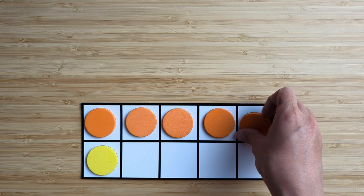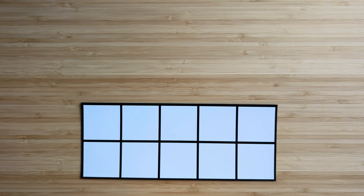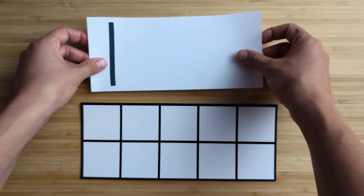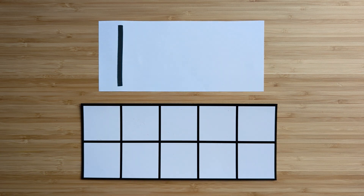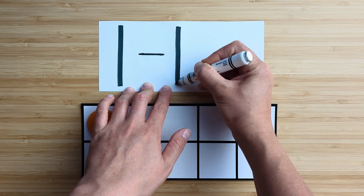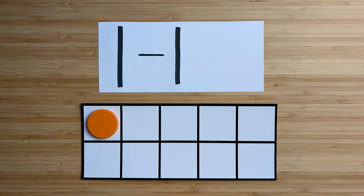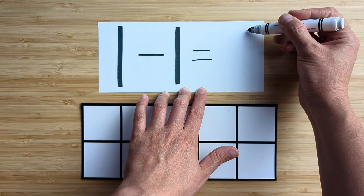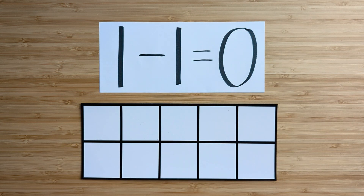Clear off your board. Let's try the next one. Make the number one. Point and count: one. One less than one — what's one less than one? Point and count — wait a second, there's none left. One less than one is zero. That means we're all done. Nice job.